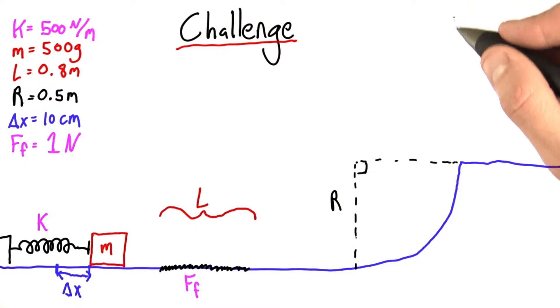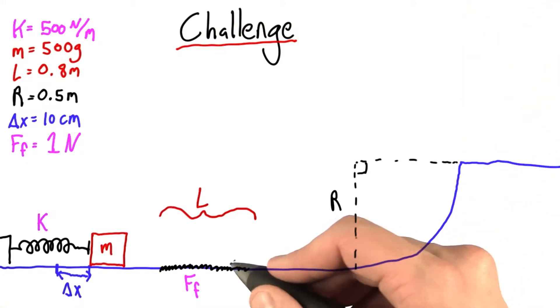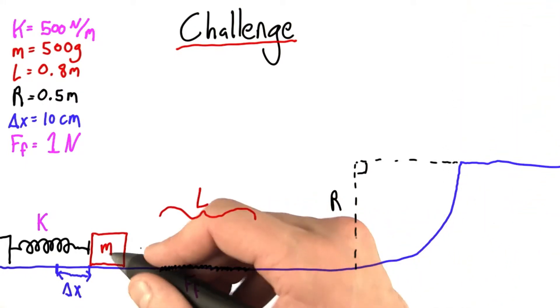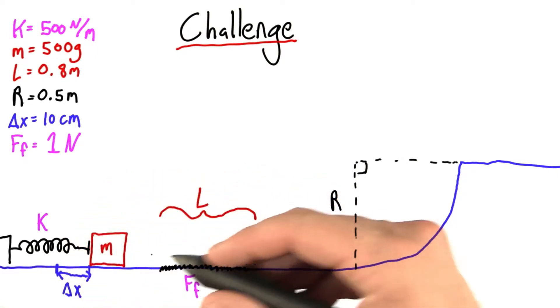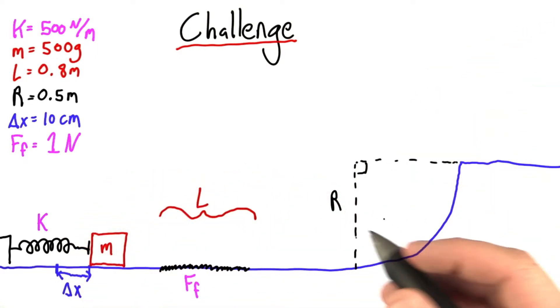It's going to travel up, up, up, up, up, up, up, and back down, back over the area with friction, it's going to compress the spring, and so on. This cycle will repeat many times until eventually,